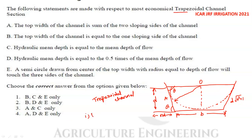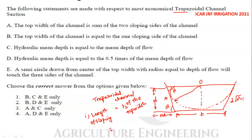First, the length of the sloping side is equal to half of the top width. Second, the hydraulic mean depth is equal to half of the depth of flow. Third, a perpendicular drawn from the center of the top width to the bottom and sloping sides are equal — meaning it touches three sides.